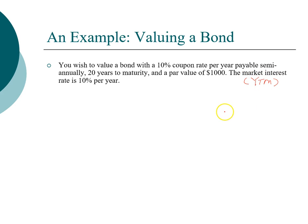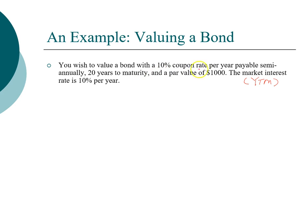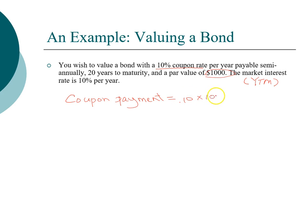To find the value of the bond we need a few things — we need to know the recurring cash flow amount, which is the coupon payment. This bond has a 10% coupon rate and a face value of a thousand dollars, so 10% on a thousand dollars is a hundred dollars. But this bond makes semi-annual payments, so we divide by two, meaning this bond will pay us fifty dollars every six months.